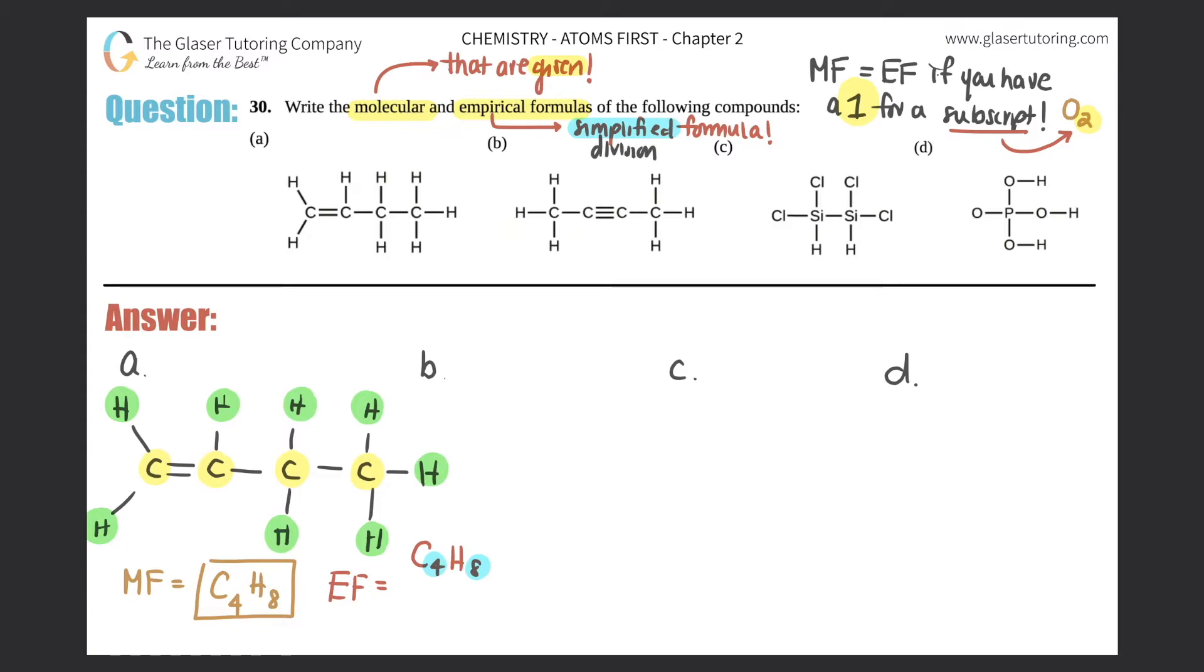So can these two numbers be divisible by something to get a simplified whole number? And yes, the number is four, right? Four divided by four and eight divided by four will get me a whole number. So four divided by four, it would turn out to be C1, right? But technically when we don't have a number there, it's implied that it's one, so you don't have to write the one there. But then this turns into H2.